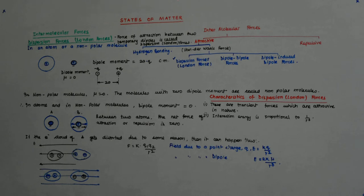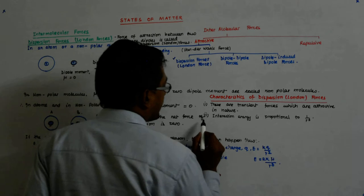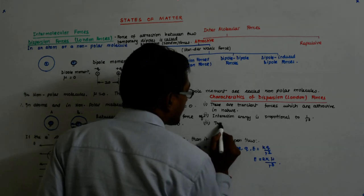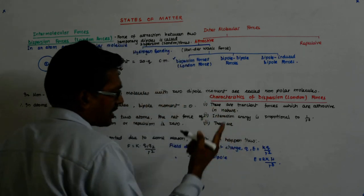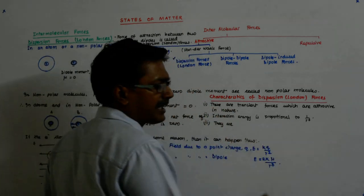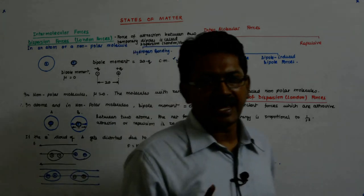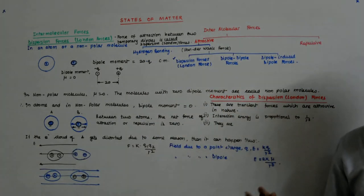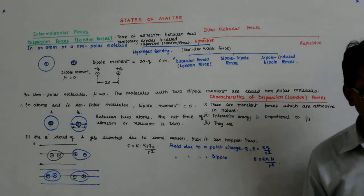And they are important. You can understand it this way, that 1 by r cubed field reacts with another 1 by r cubed field. Okay? That's why it is 1 by r cubed whole squared.